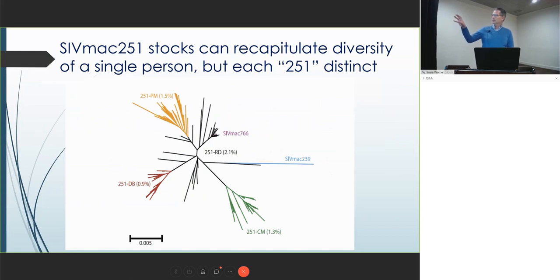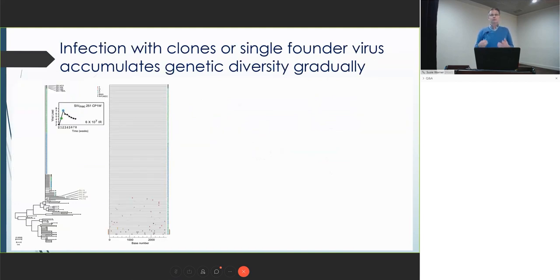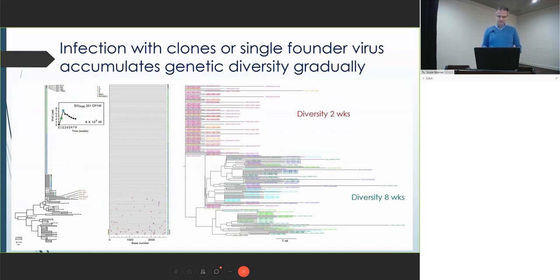Each lab that grew out their virus from their lab grew a slightly different population. These all have founder populations. Clones became really useful because you avoid this and you can make comparisons. When you infect with a clone or with a swarm at a low dose where you infect with a single virus, a single founder, this is what it looks like. This is a highlighter plot. All those sequences are identical. And then at the bottom you start to see very small changes. This is the accumulation of changes of diversity, which is gradual.